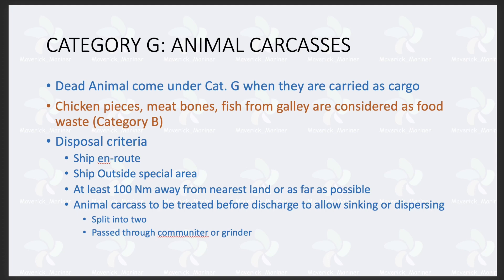Now let's come to Category G — that is animal carcass. Basically, dead animals will come under Category G only when they are carried as cargo. What does that mean? Livestock ships — which carry cattle, sheep, goats — carry them from one place to another. Those animals are the cargo, transported from point A to point B. Now if in transit those animals die because of sickness or any other reason, that dead animal will come under Category G — animal carcass.